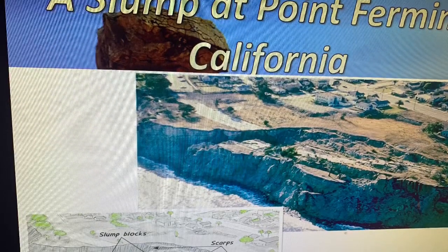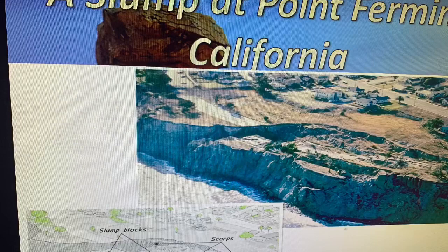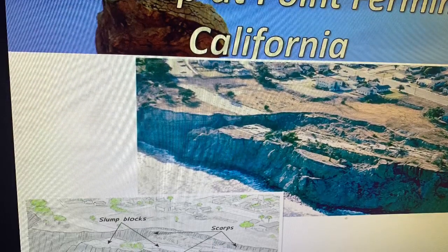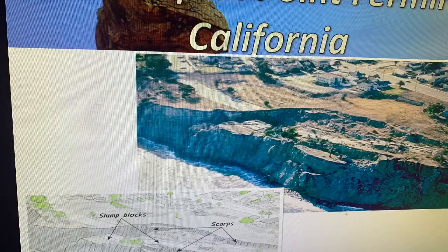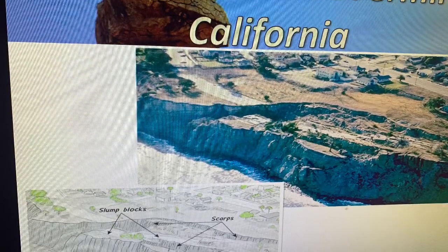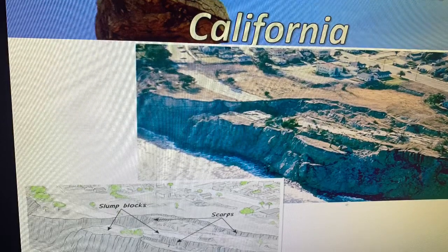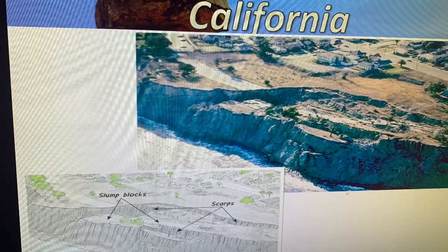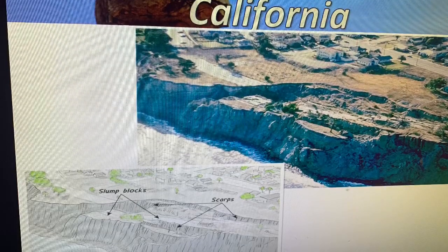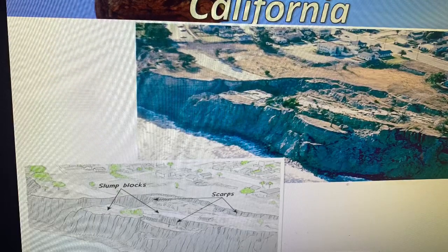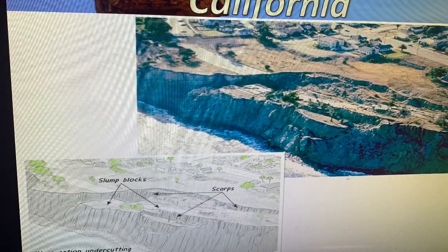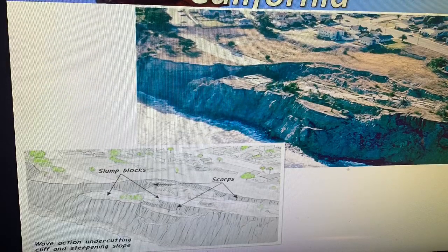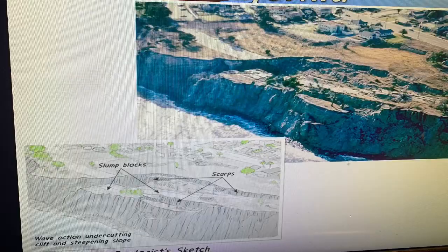The next type of mass wasting is slumping, which happens when you undercut a vertical surface — a cliff or mountain — at its base. In the picture, this is a cliffside in California where the Pacific Ocean waves are weathering and eroding away at the bottom of the cliff. As the ocean eats away at the support holding up the material above, eventually the stuff on top is no longer supported and slides down. Gravity pulls it down in a curved pattern, creating a curved break.